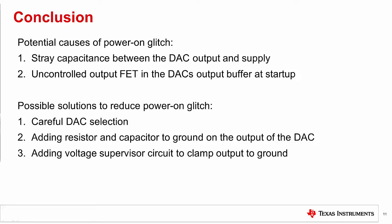We also discussed some practical strategies to reduce power-on glitch. The first strategy, which is simply selecting a DAC which is designed to limit power-on glitch, is the easiest. This functionality can be found in the device's datasheet. Next, we discussed the benefits and drawbacks of having a resistor and capacitor on the output of the DAC connected to ground to help discharge the glitch and to smooth the output. Finally, we discussed how to implement a voltage supervisor on the power supply to clamp the output to ground during startup.